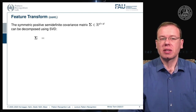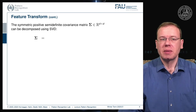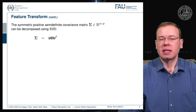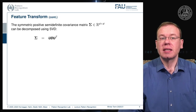The singular value decomposition allows us to decompose any matrix into three matrices, typically written as U, D, and V-transpose. Because our covariance matrix is symmetric and positive semi-definite, we don't need a separate V — the decomposition simplifies to U D U-transpose, where U is an orthonormal matrix interpretable as a rotation, and D is a diagonal matrix with the singular values on the diagonal.